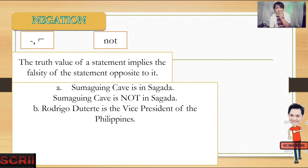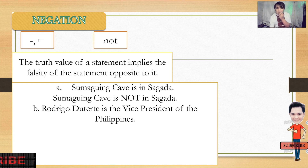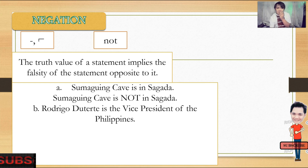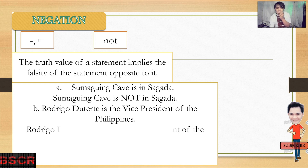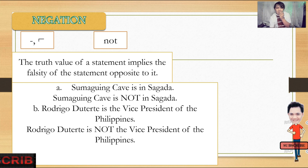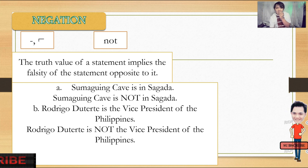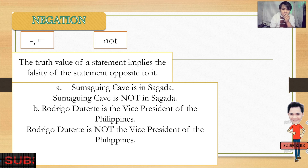Next: 'Rodrigo Duterte is the vice president of the Philippines.' Is this true? This is a false statement. If we apply the word 'not': 'Rodrigo Duterte is not the vice president of the Philippines.' So the false value becomes true.